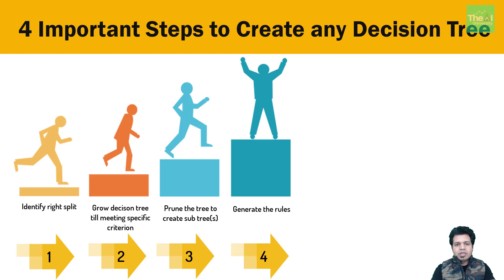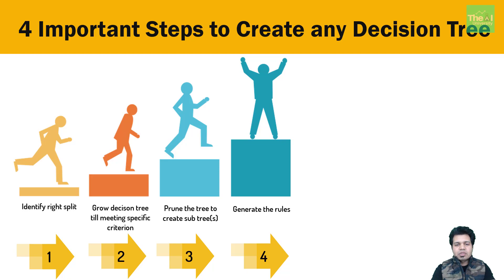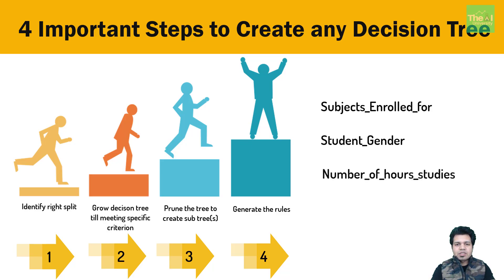The first step to build the decision tree is to identify the right split on the training data set. For example, if you have students data with three variables: subjects enrolled (mathematics, physics, and chemistry), student gender (male and female), and number of hours studied (values 1 to 20), then the number of different split options you can have are 3 x 2 x 20, which equals 120 different split options. But how do we identify which is the best split of the 120?